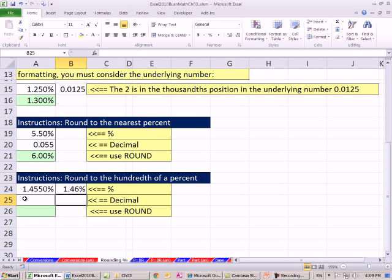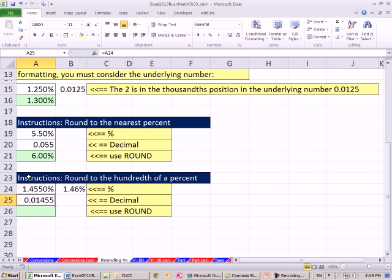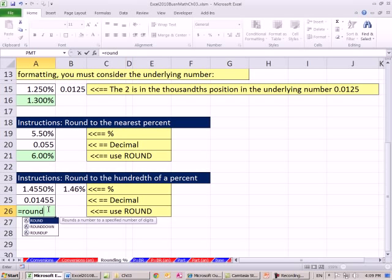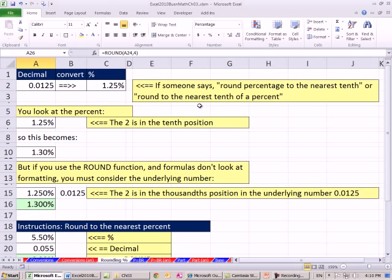But if you're doing it with a round function, it might be helpful to look at what's underneath. I'm going to apply the general. Oh, 1, 2, so it's that first 5, so it's actually 1, 2, 3, 4. So equals round, this number, comma, 4. And then I'll give this 1.46%, all right.